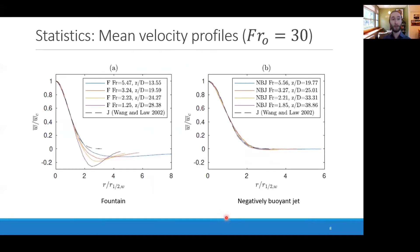Here's some statistics. These are mean velocity profiles for both the negatively buoyant jet and fully developed fountain stage, normalized here by the centerline velocity and by the local half-width. We see for the negatively buoyant jet, they're very much Gaussian shapes at a wide range of local Froude numbers, even near the top, and when normalized in this way, it looks very similar to a neutral jet, which is also shown as a reference.